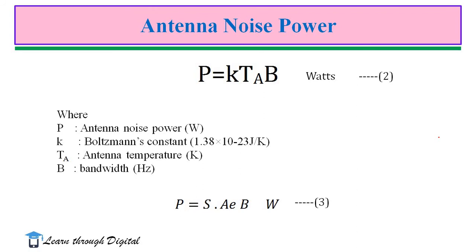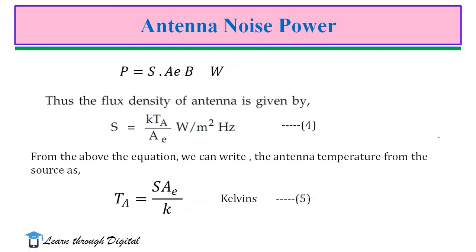Antenna noise power: the noise power received from an antenna at temperature TA can be expressed as P = K·TA·B, where P is the antenna noise power in watts, K is the Boltzmann constant, TA is the antenna temperature in Kelvin, and B is the bandwidth in Hertz. Antenna noise power P can also be written as S·AE·B watts, where S is the power density, AE is the effective area, and B is the bandwidth. The flux density of the antenna is given by S = K·TA / AE watts per meter square. From this, the antenna temperature from the source is TA = S·AE / K in Kelvin.